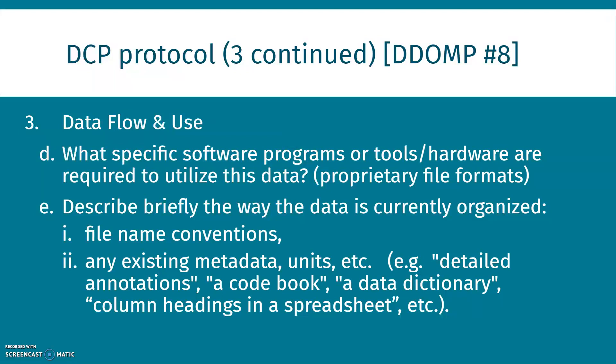Data flow and use continued. What specific software programs or tools and hardware are required to utilize this data? Are there any proprietary file formats? Describe briefly the way the data is currently organized, file naming conventions, any existing metadata units for their detailed annotations, a code book, a data dictionary — sometimes simply column headings in a spreadsheet and what they mean are important for reuse.